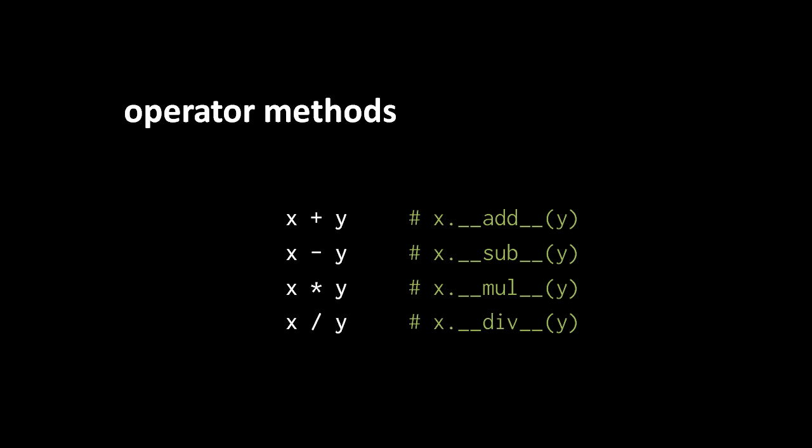And the reason for the underscores is that Python has a convention whereby any attribute name which is generally not meant to be accessed directly, such names by convention start and end with two underscores. So the intention generally is that the __add__ method here is not invoked directly, rather we invoke it by using the plus sign operator.